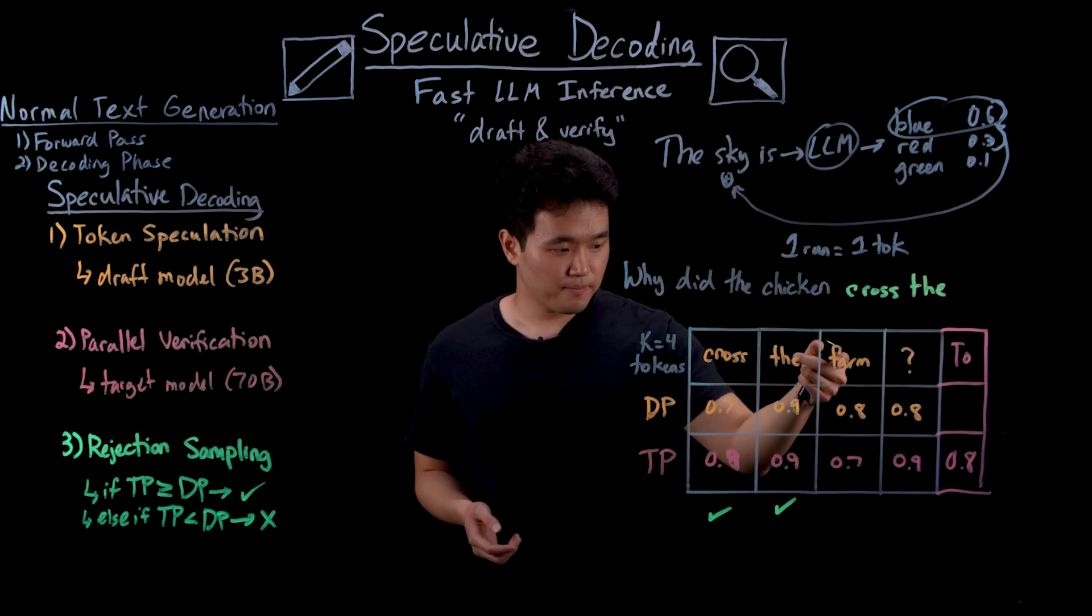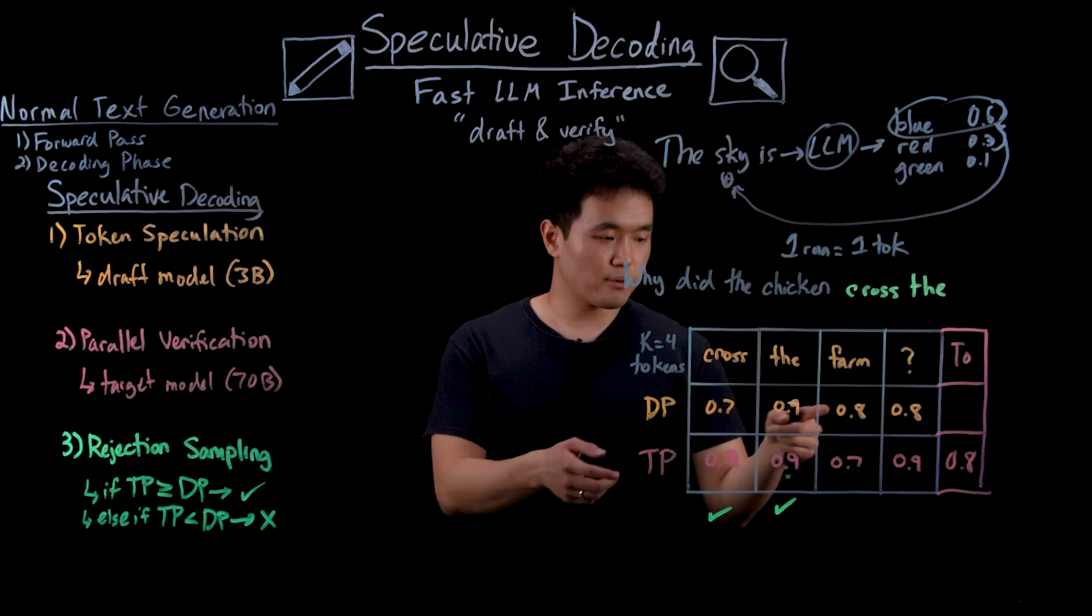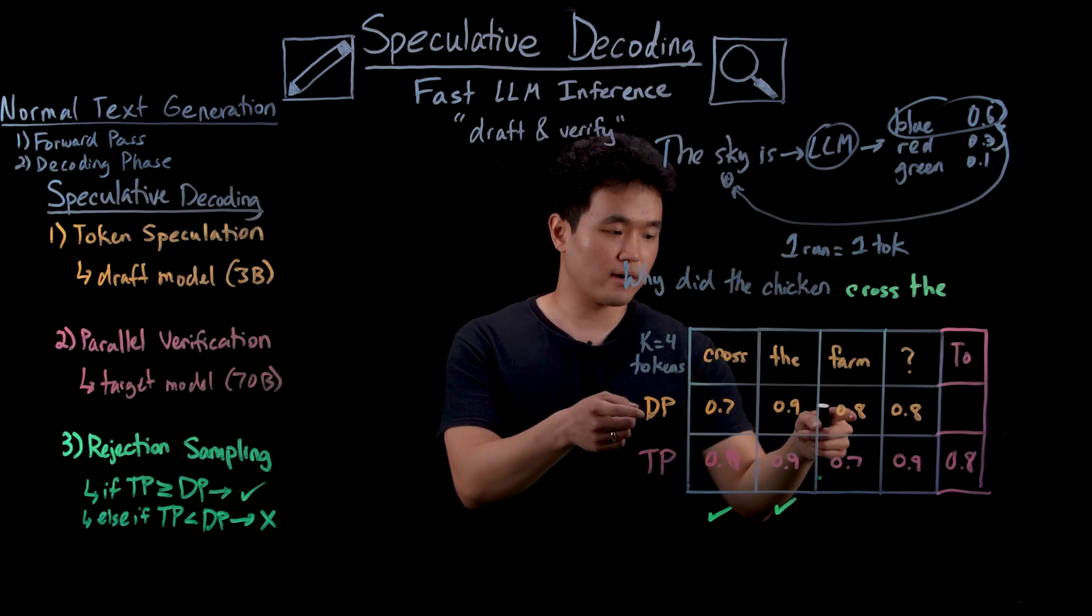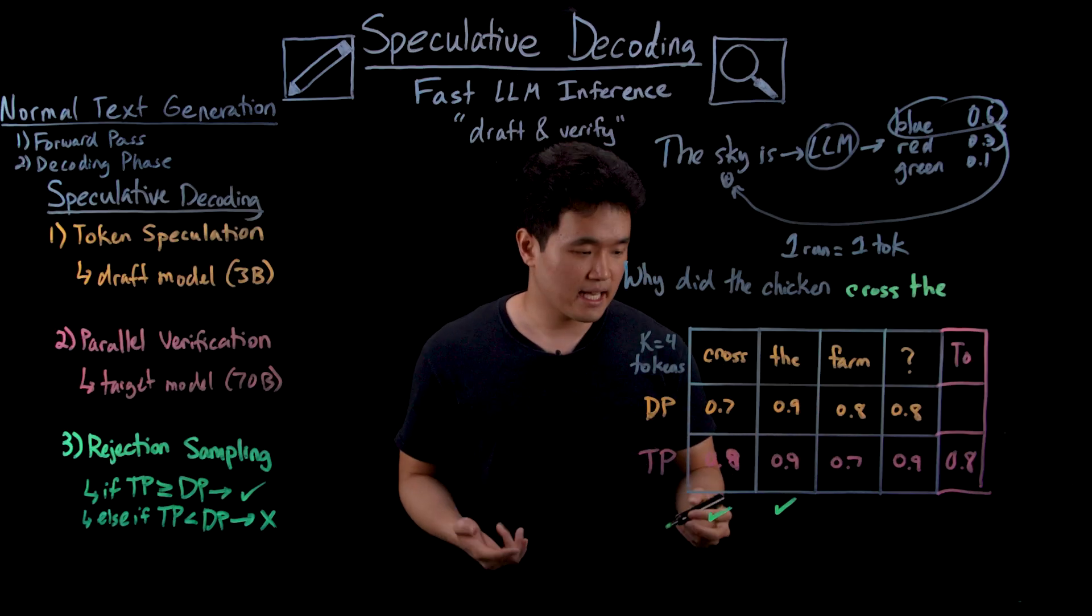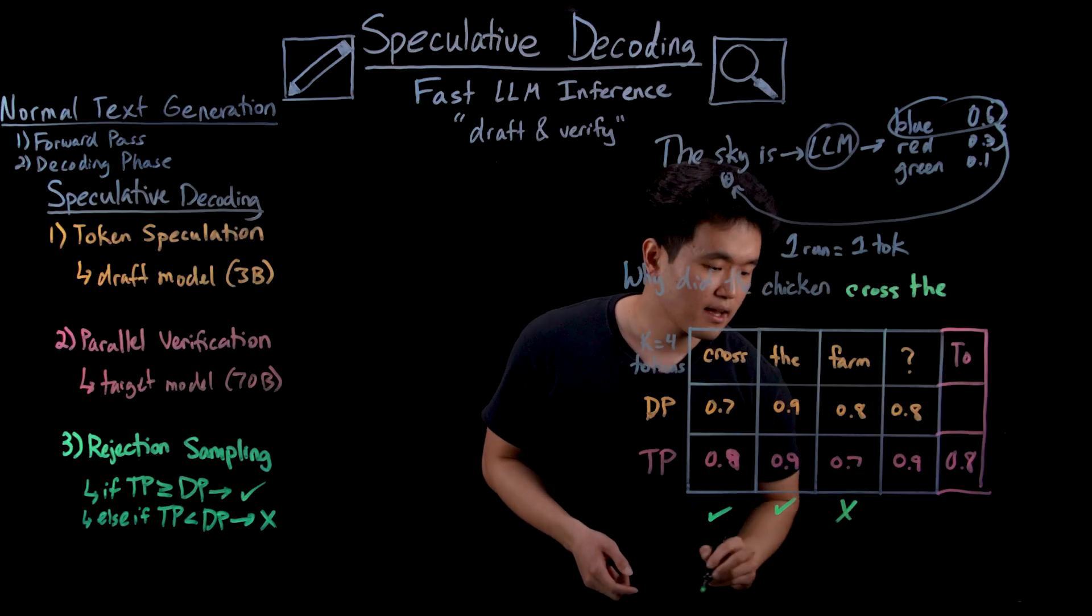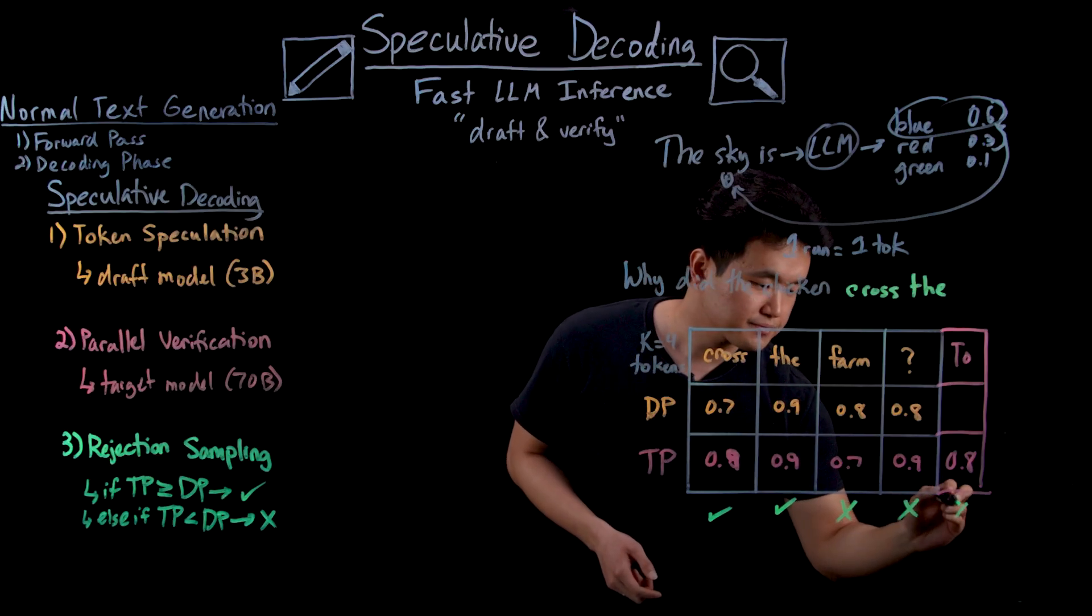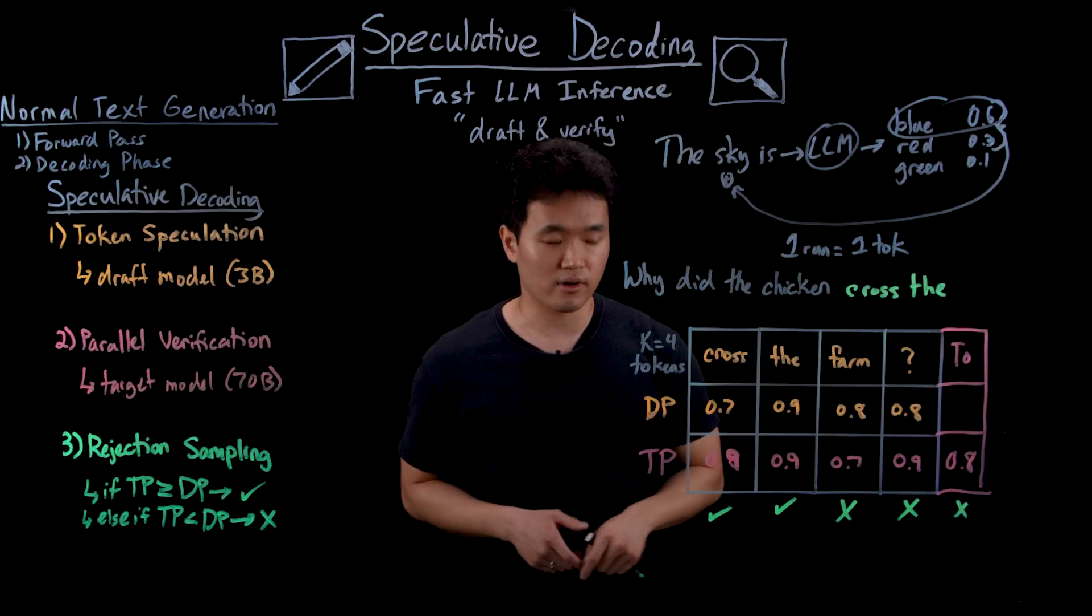Next, for the word farm, the target model's probability of 0.7 is less than the draft model's of 0.8. So in this case, we have to reject along with everything that follows it, because their generation was dependent on what came before.